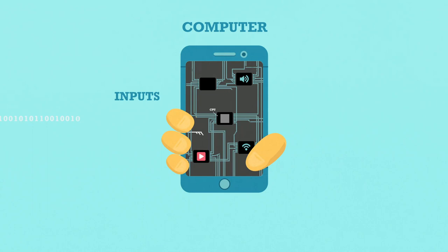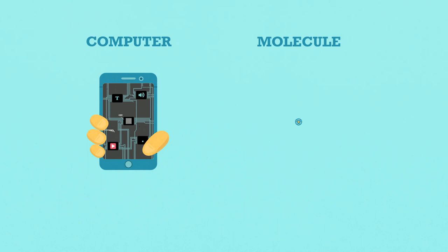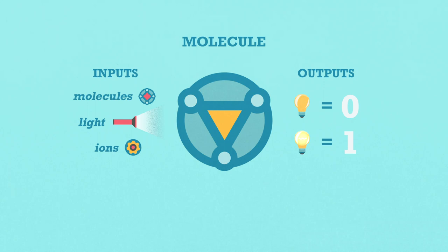Did you know that not only computers process information? While your computer works with electrical inputs, molecules can perform a 1-0 operation when interacting with other molecules, ions, or light.